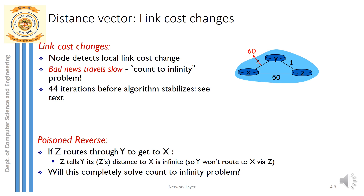The next scenario: the same graph, but the cost to reach from y to x is now increased from 4 to 60. We will see what happens when the cost is increased from 4 to 60. At t=0, the distance vector is calculated for y, and the distance is 4. At t=1, that information of y is circulated to node z. Node z will now calculate its distance vector as cost from z to y (1) plus distance vector of y (4), giving 1 plus 4 equal to 5.